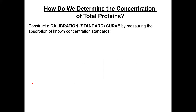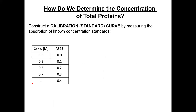The first thing we do is construct a calibration curve — also called a standard curve — by measuring the absorption of known concentration standards. We prepare them in the lab: 0, 0.3, 0.5, 0.7, and 1 molar. For the standards, we use a protein called BSA, or bovine serum albumin.